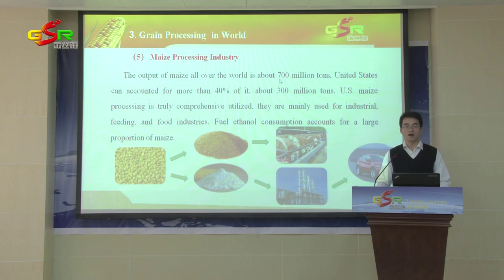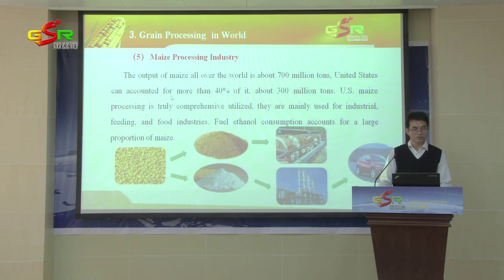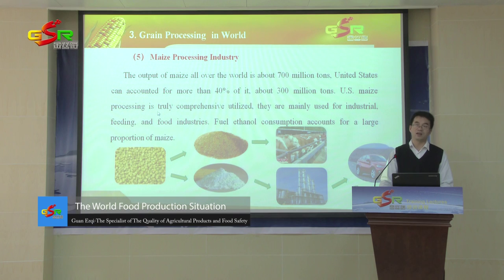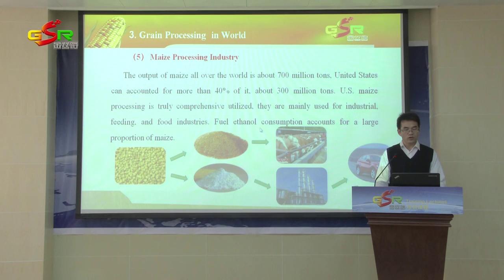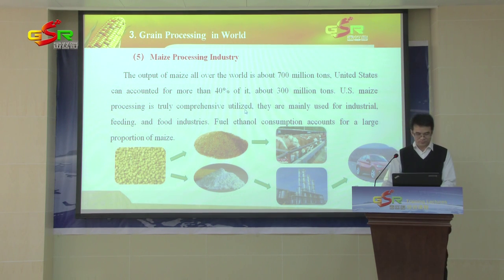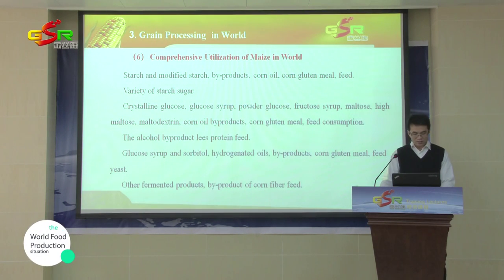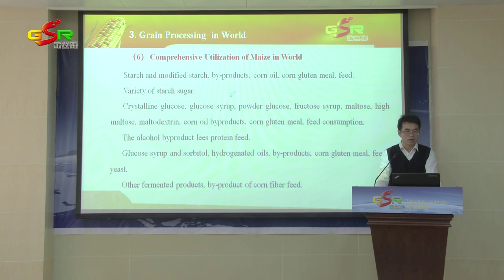The output of maize in the world is about 700 million tons, and the United States accounts for more than 40% of it, about 300 million tons. The United States' maize processing is truly comprehensive. It is mainly used for industrial, feeding, and food industrial purposes. Ethanol consumption accounts for a large proportion of maize use in the United States. The comprehensive utilization and production of maize includes maize oil, maize gluten meal, and feed.